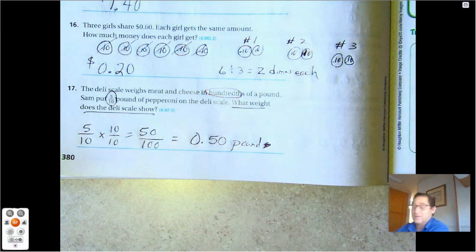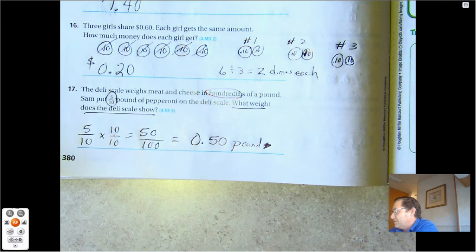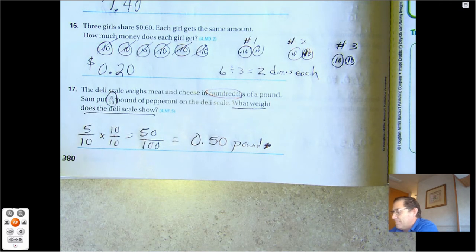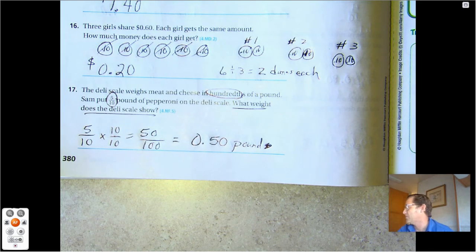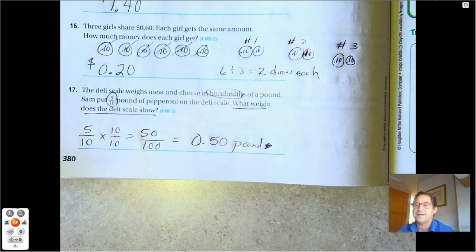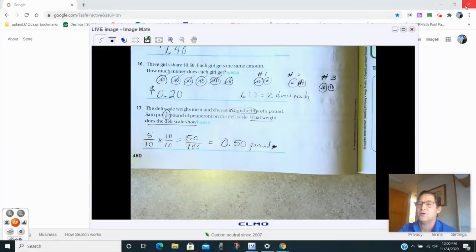All right, so that was really it for the mid-chapter checkpoint. I'm confident you're going to do really well on this mid-chapter checkpoint. So until our next chapter, we're going to be adding fractional parts of ten and hundred in our next session. So until then, may the numbers always be in your favor.